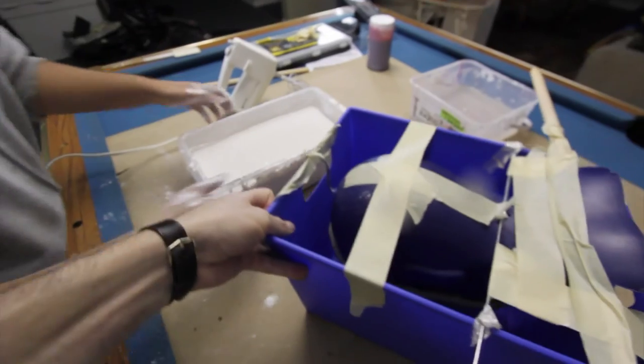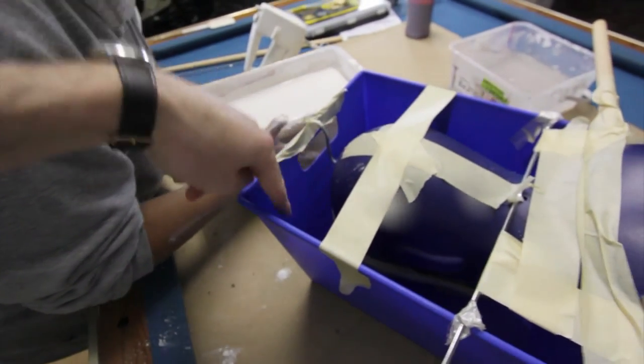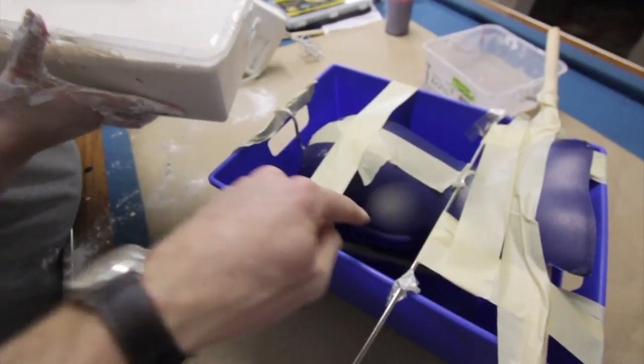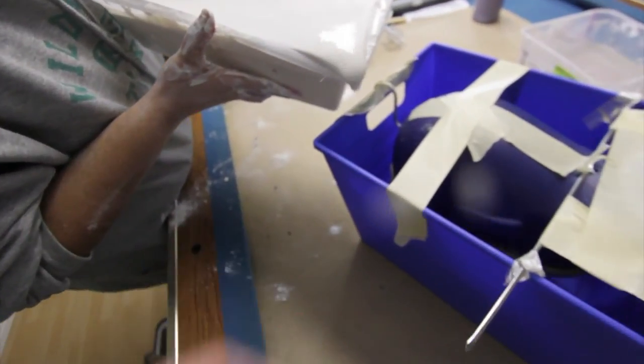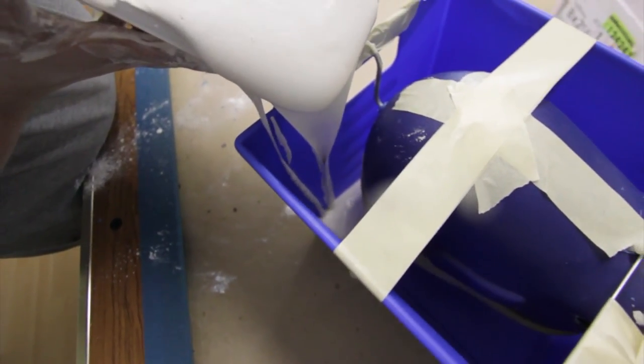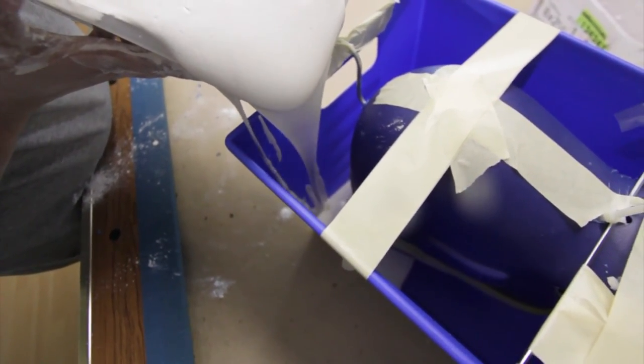Now we're going to pour it into the corner of the mold. We've got our sculpt set up inside the bucket. It's about this far from the bottom. We're going to pour in the same spot and it will fill up all the way to the top.